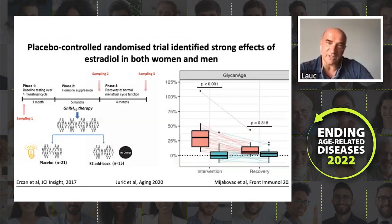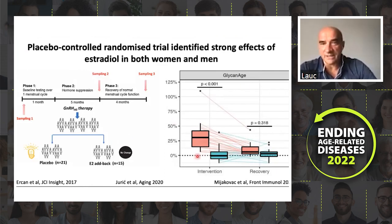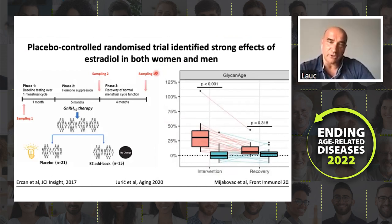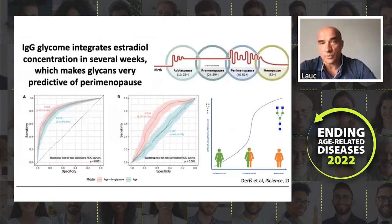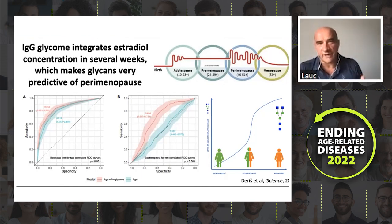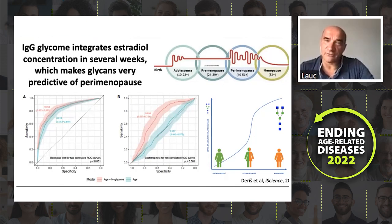We are trying to do hard science to understand how this happens. In a very interesting study, samples were collected where gonadal hormones were chemically blocked and then either supplemented with estrogen or placebo. Ladies on placebo aged, on average, nine years in six months, while estrogen supplementation did not cause that aging. Interestingly, in men it is also estrogen — testosterone works, but only if you do not block aromatase. What we believe is that IgG glycome composition is a kind of reflection of the average concentration of estrogen over the last couple of weeks — something like what HbA1c is for glucose, glycome composition is for estrogen.